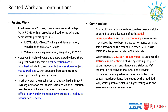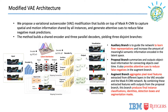The existing methods face difficulties when object detections are ill-initialized. We propose a modified VAE to capture spatial and motion information and generate attentive cues to reduce false negative mask predictions.